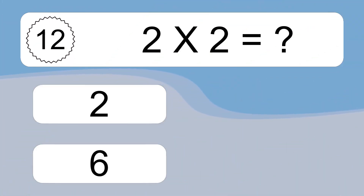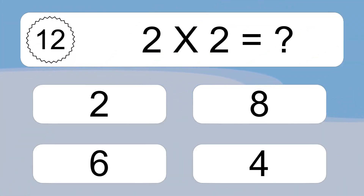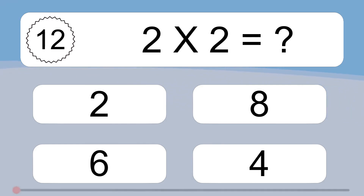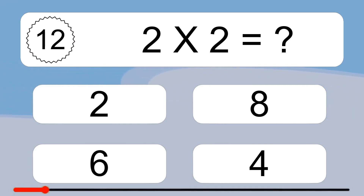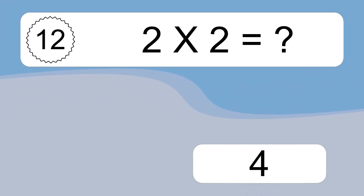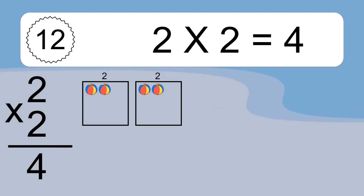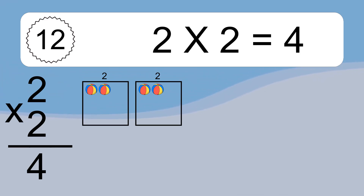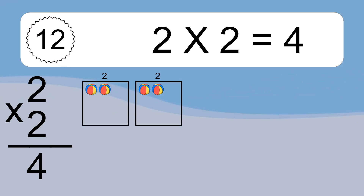2 times 2 equals what? 2 times 2 equals 4. We have 2 boxes, and each box has 2 colorful balls inside. If you count all the balls in all the boxes together, you will have 2 times 2 balls. This equals 4 balls.